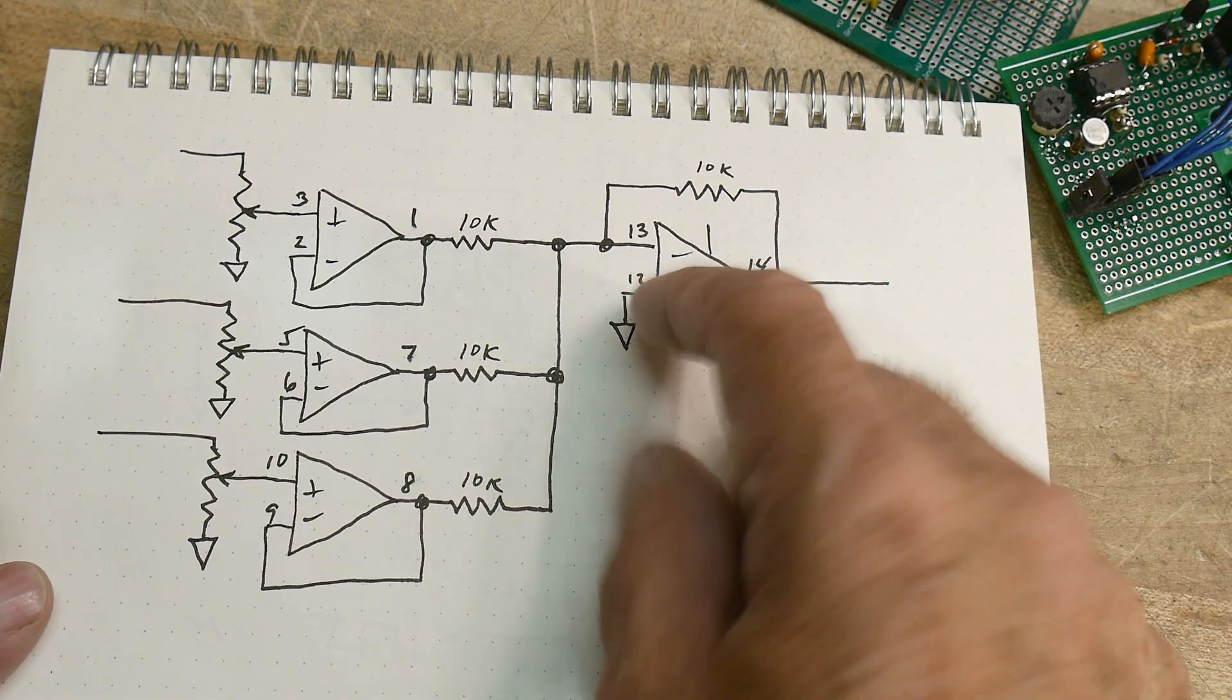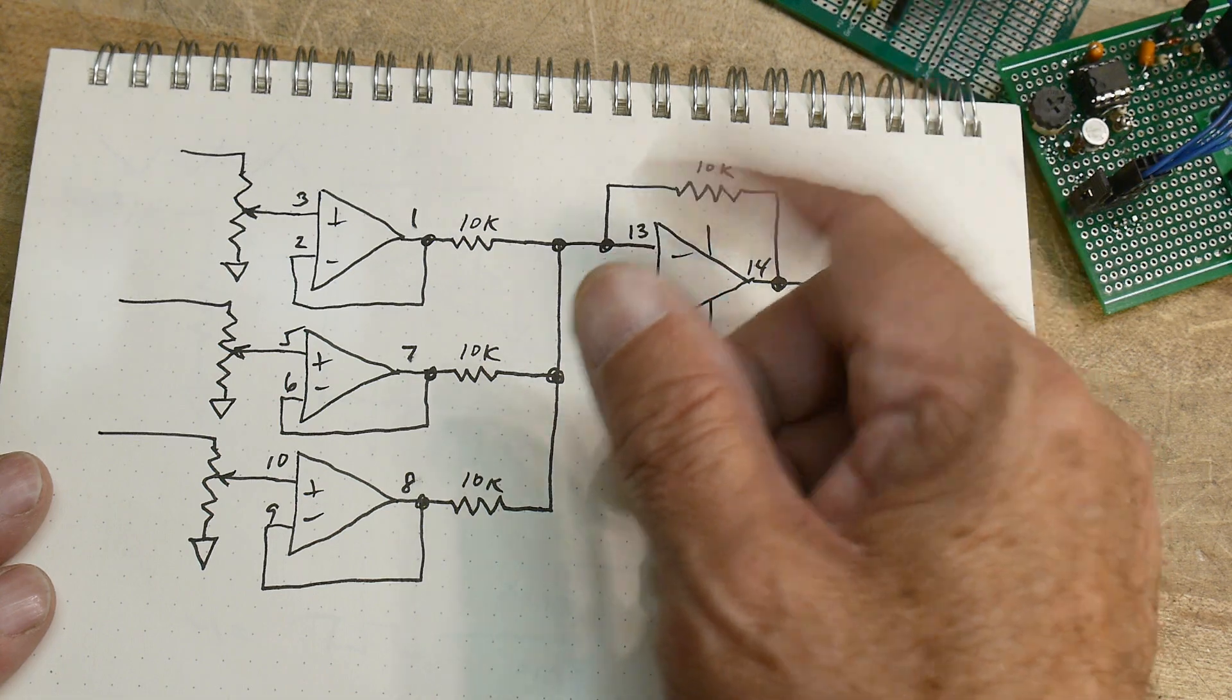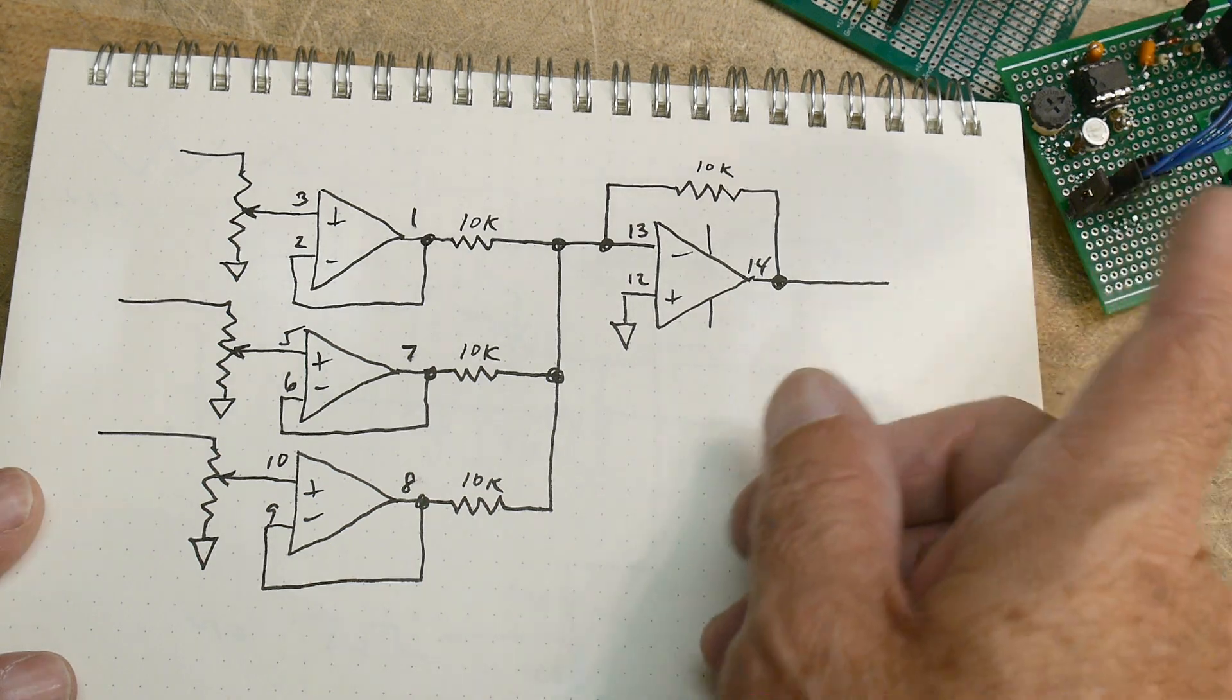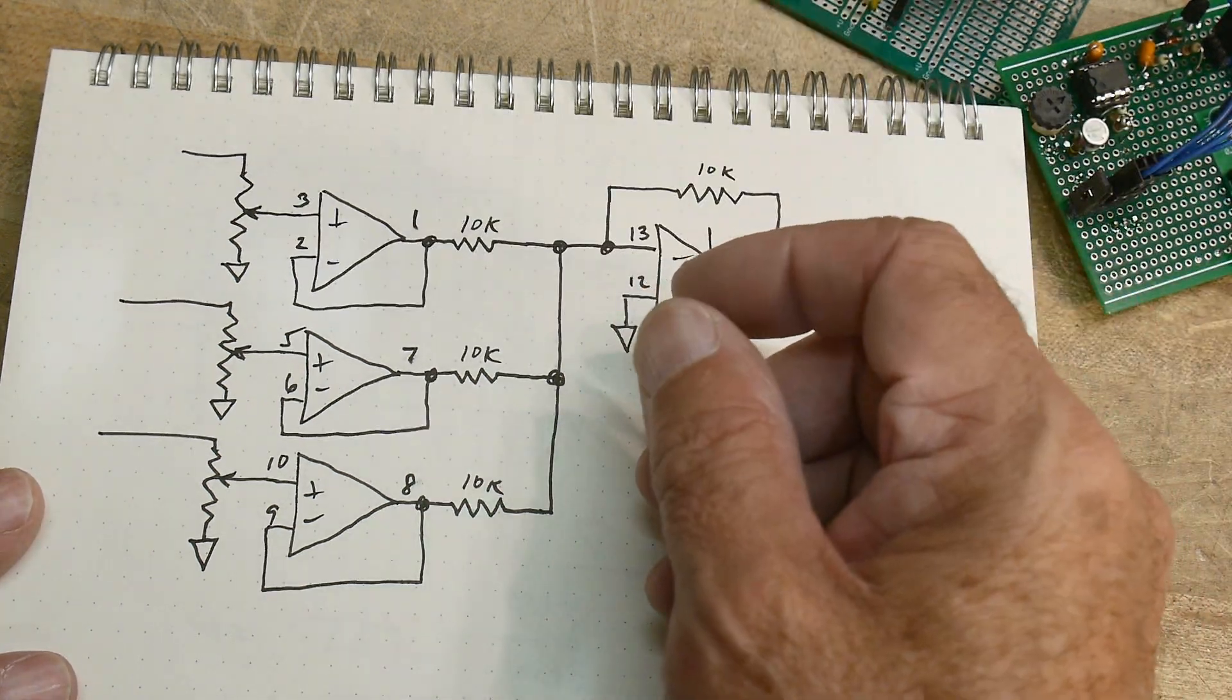So I'm using a TL074, because there's four parts. The other one is a 072, but this is going to be 074.